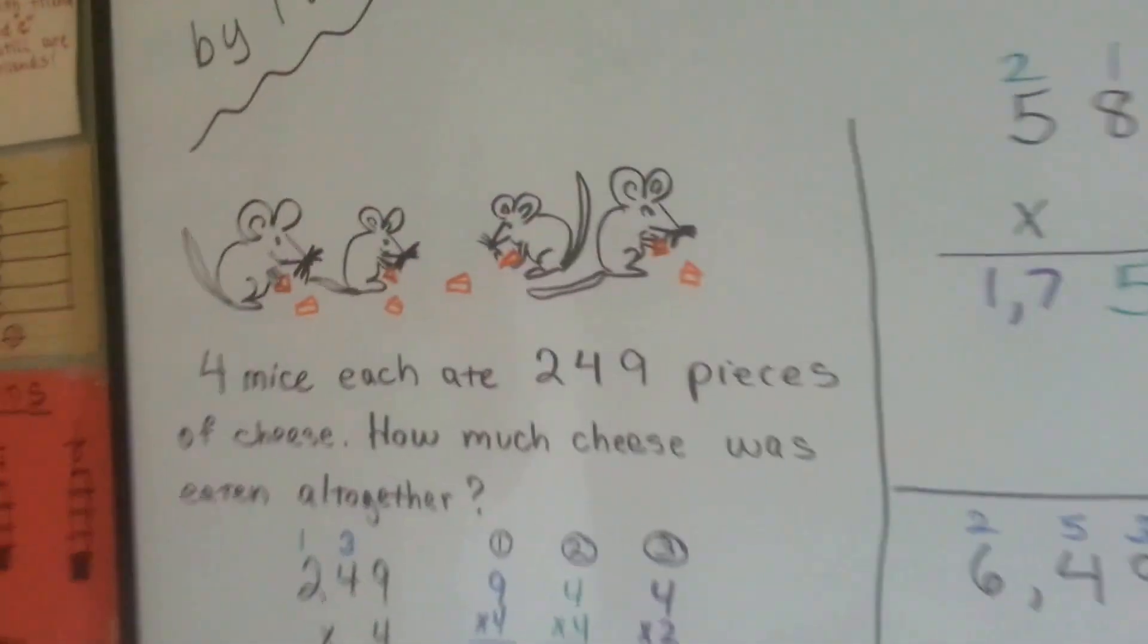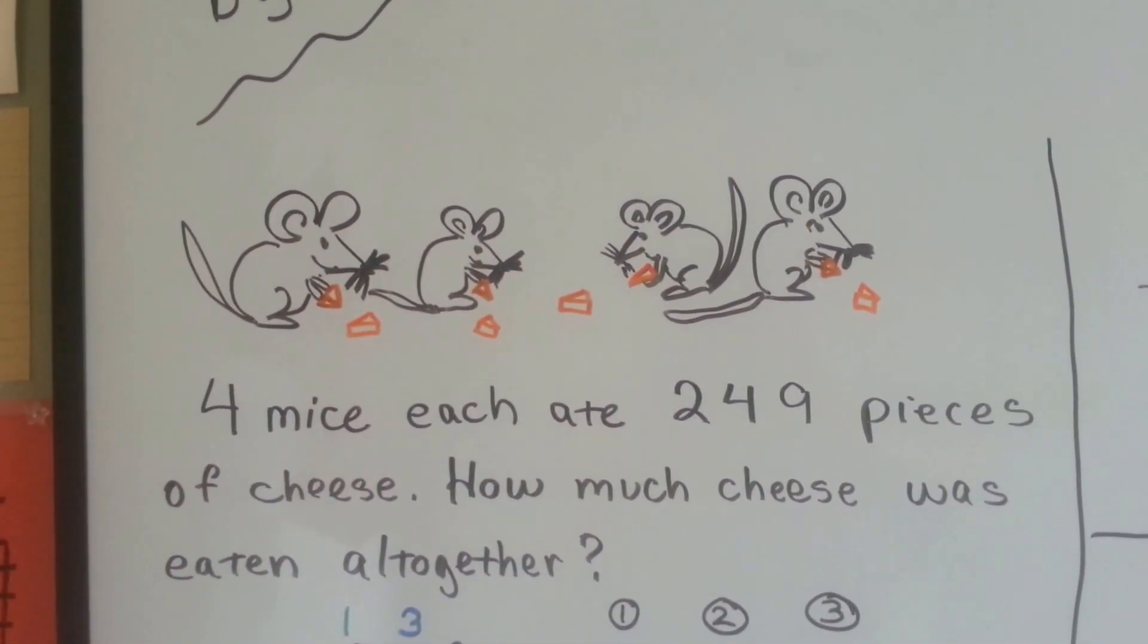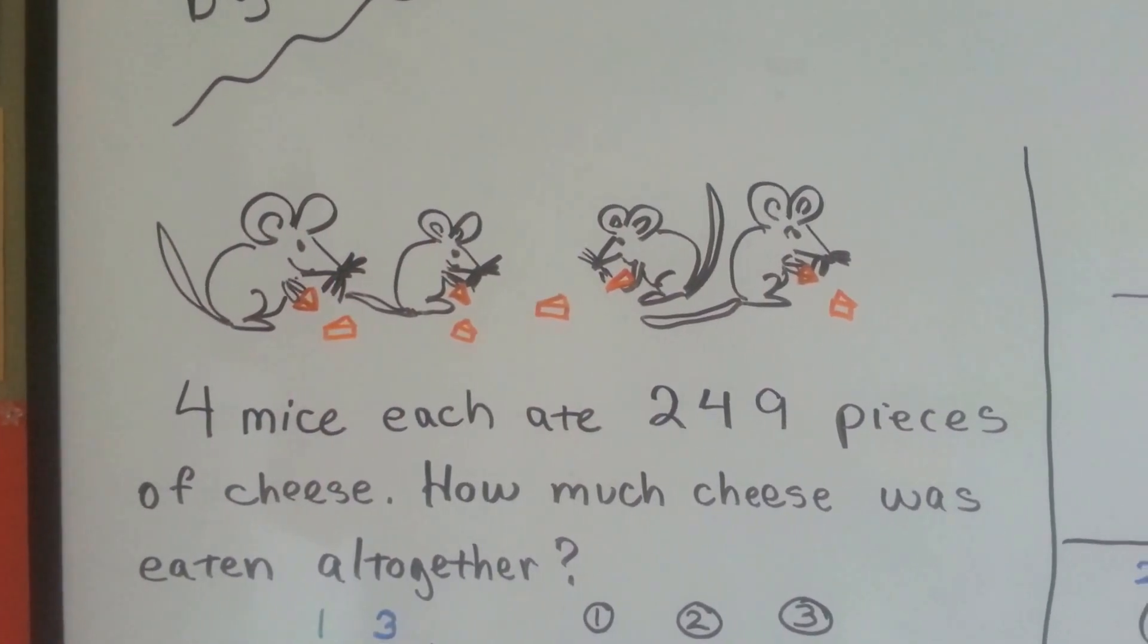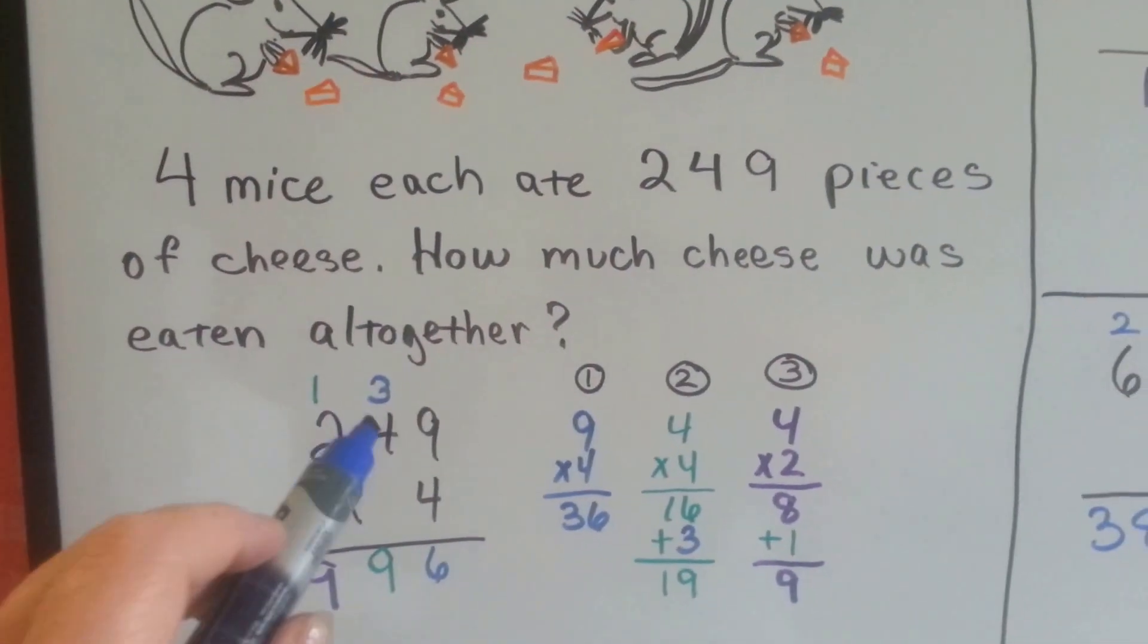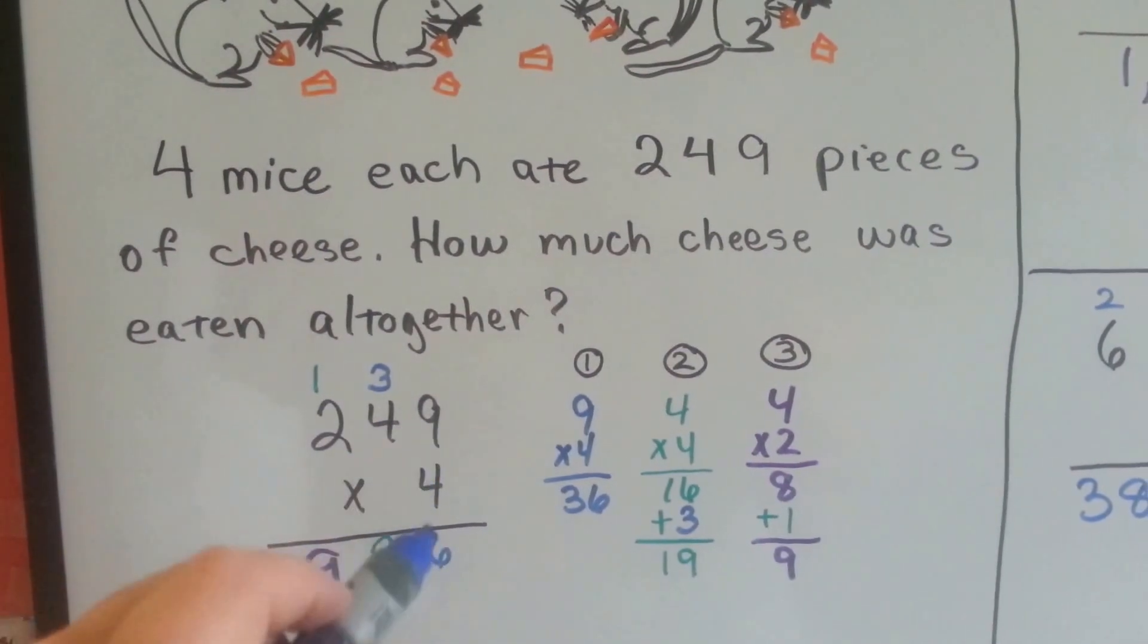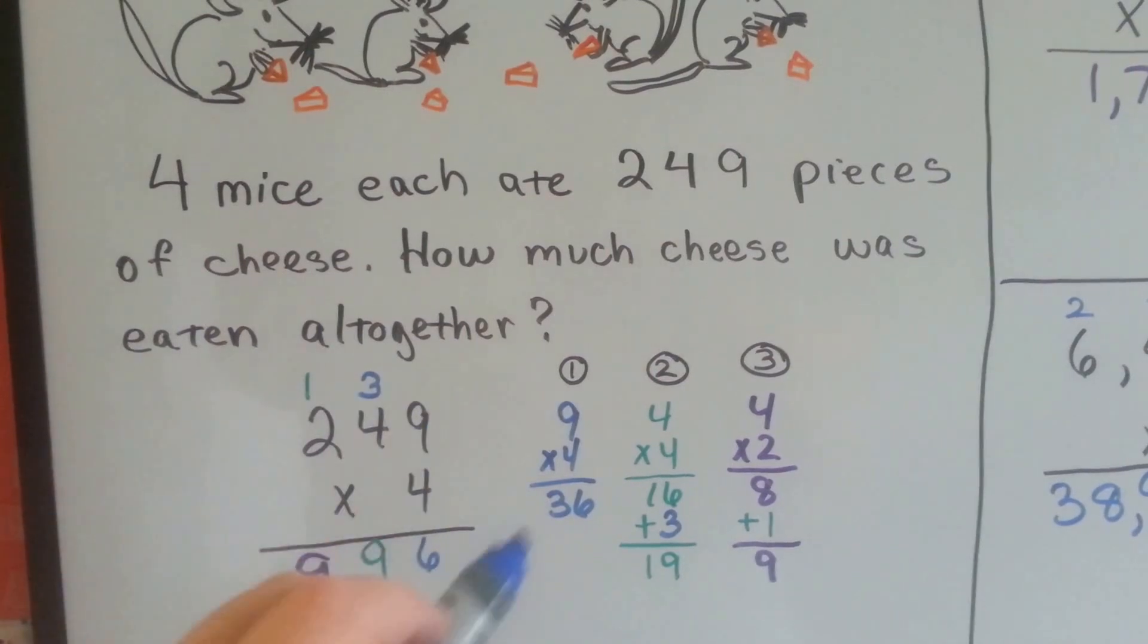Here's what we've got: Four mice each ate 249 pieces of cheese. How much cheese was eaten altogether? So here's our problem, we have 249 times 4. The first thing we're going to do is the 9 times 4. That's the first thing. And we get 36.